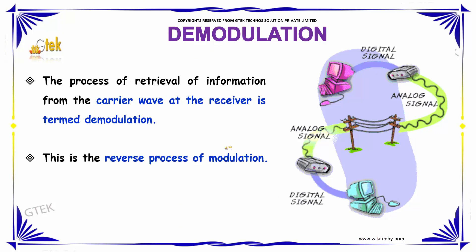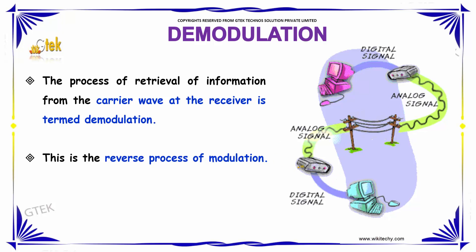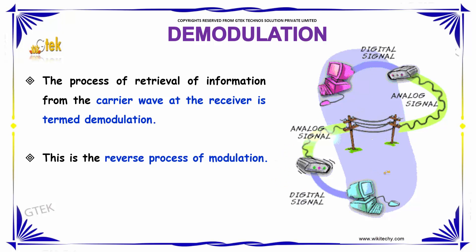What is demodulation? The process of retrieval of the information from the carrier wave at the receiver side is termed as demodulation. This is the reverse process of modulation.